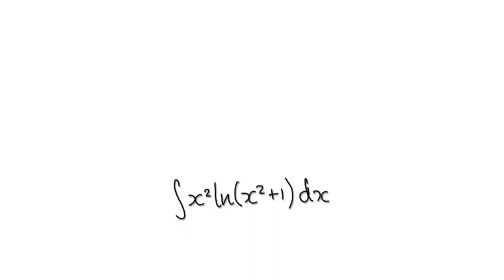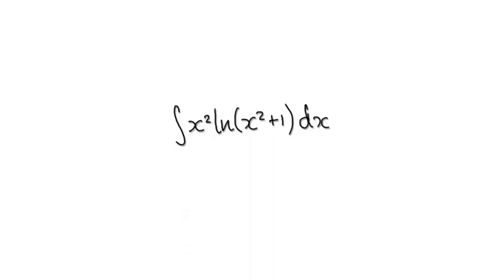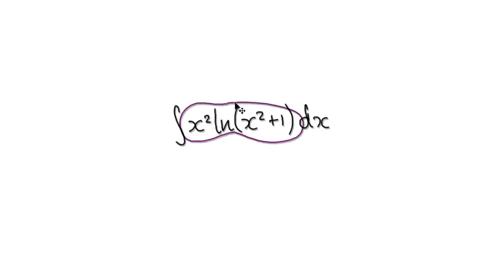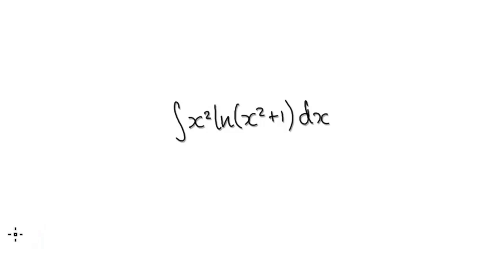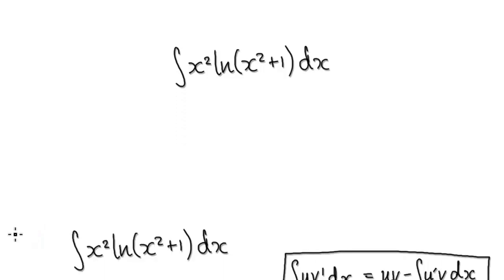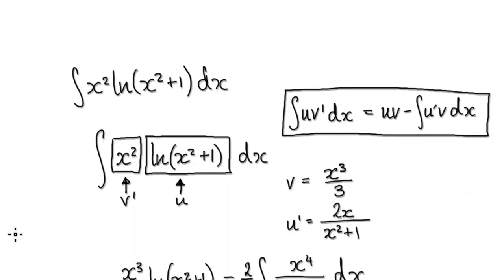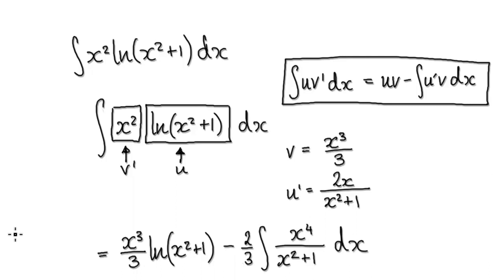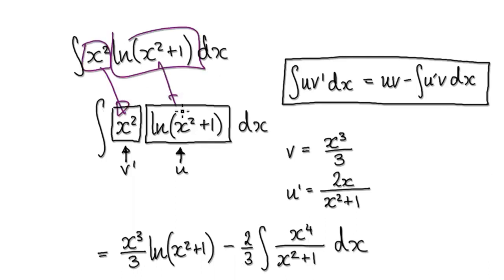Let's give you guys some practice now. Use a combination of integration by parts and trigonometric substitution in order to integrate this. Press pause and have a go. To do this, visualize one part as one block and the other part as another block.